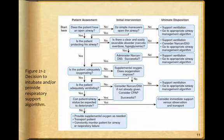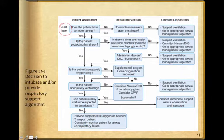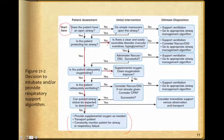Figure 21.2 — the decision to intubate and/or provide respiratory support algorithm. Starting at the top: does the patient have an open airway? If yes, is the patient protecting their airway? Can the patient's airway status be expected to deteriorate? If no, provide supportive care and transport. If any question gets a no, move to the right — for example, if simple airway maneuvers don't fix the airway, go to supportive ventilation or the appropriate airway management algorithm. If a BLS airway or simple adjunct doesn't work, you'll likely need to facilitate an airway.